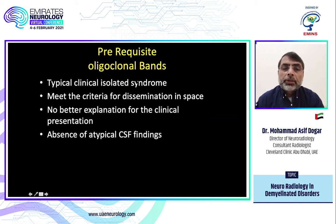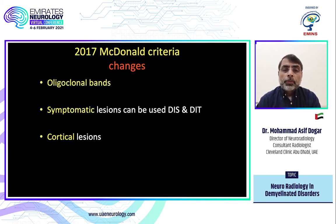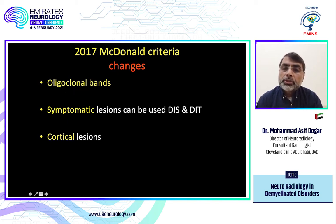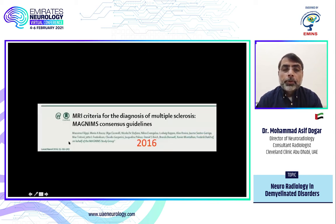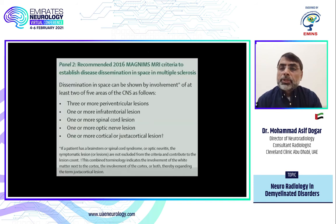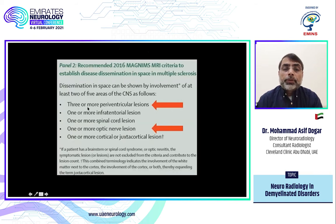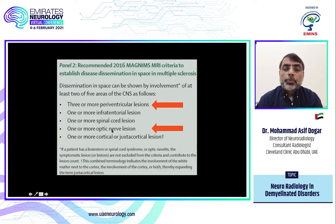Before applying the oligoclonal band criteria, ensure the patient has a typical clinically isolated syndrome, meets dissemination in space criteria, has no better explanation, and has no atypical CSF findings. The differences between 2017 and 2010 McDonald criteria include: addition of oligoclonal bands, counting both symptomatic and asymptomatic lesions, and inclusion of cortical lesions. The European MAGNIMS group differs slightly — they require three periventricular lesions (McDonald requires only one) and also count optic nerve lesions for dissemination in space.